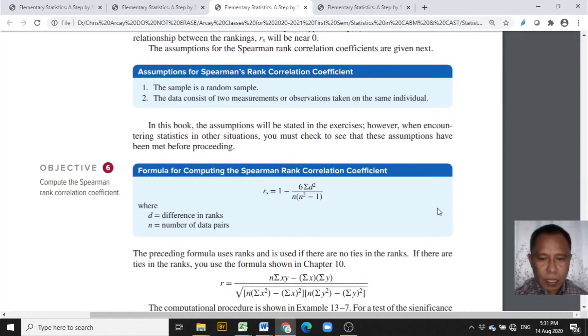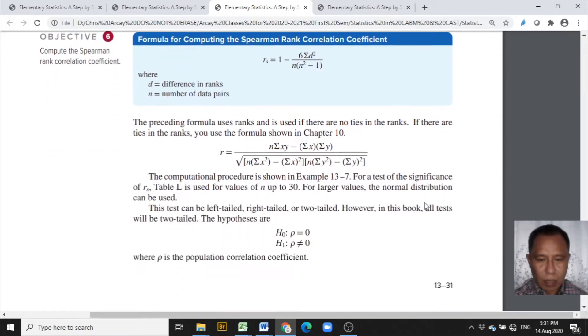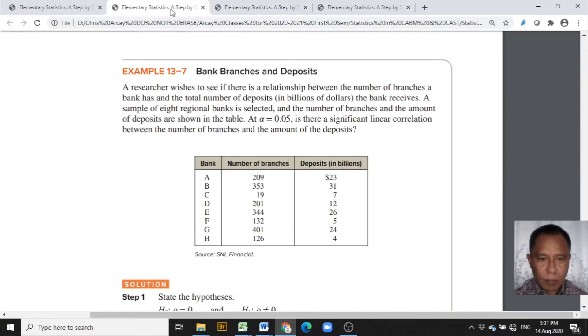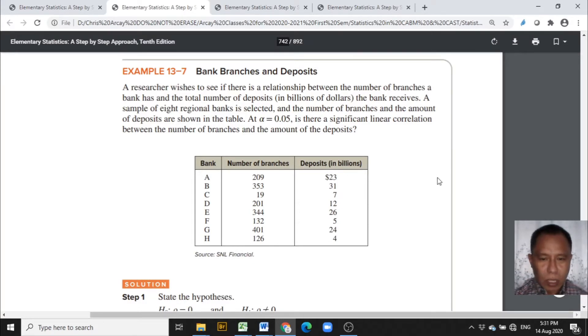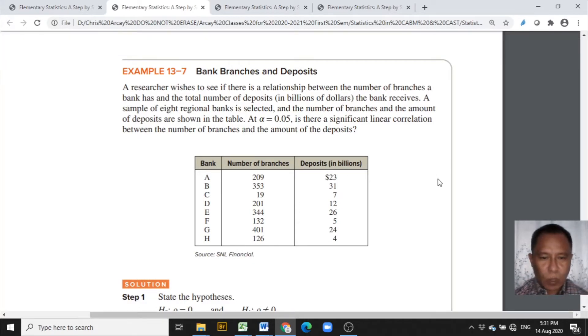This is the formula for computing the Spearman rank correlation coefficient and this is used in the Excel template. The example that will be used in this video comes from the book authored by Alan Bluman entitled Elementary Statistics Step-by-Step Approach, copyrighted 2018. Example 13-7 is entitled Bank Branches and Deposits.